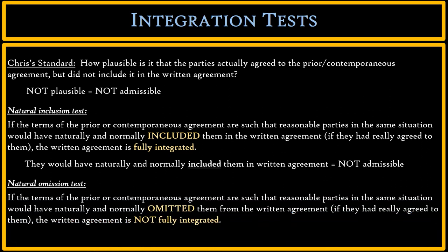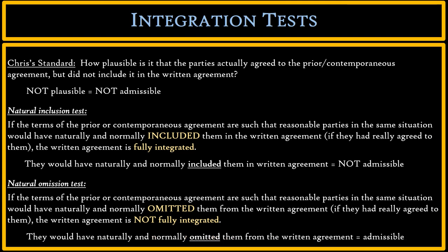We also have the natural omission test, which is functionally the same as the natural inclusion test — except one is expressed in the affirmative and one in the negative. The natural omission test says: if the terms of the prior contemporaneous agreement are such that reasonable parties in the same situation would have naturally and normally omitted them from the written agreement, the written agreement is not fully integrated. So if you say the parties would have naturally and normally omitted the prior agreements from the written agreement, then those prior agreements are admissible to the jury.